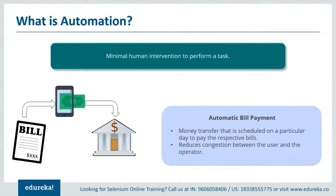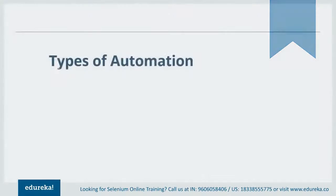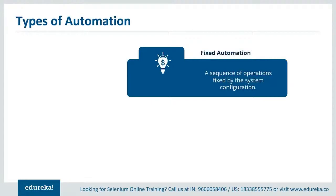Now that you've understood what automation is, let's look at the different types. There are basically three types of automation: fixed automation, programmable automation, and flexible automation. Fixed automation is the sequence of various operations that remains fixed and cannot be scheduled or customized by the user. This type is mainly used in the mechanical industry to carry out a desired job.